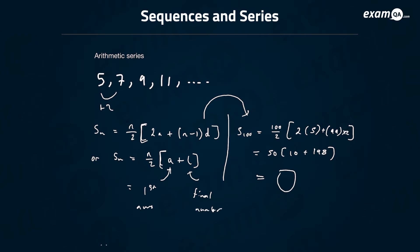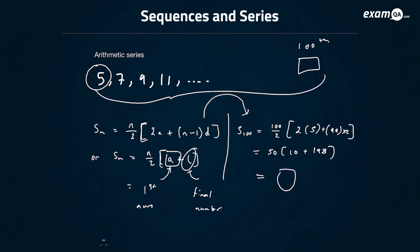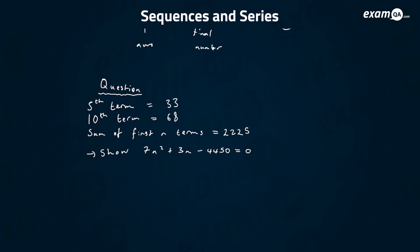What does that mean? Basically, if I wanted to add up the same question — the first 100 numbers — to use this formula I need the first number, which would be 5, but I also need that 100th number. Then I could just plug it into the equation. So let's look at an actual question on this.